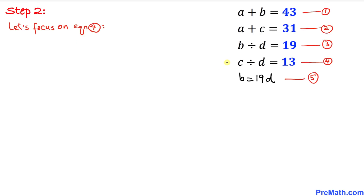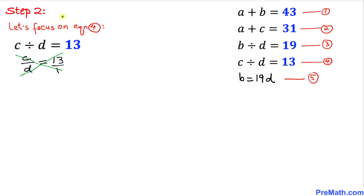Now let's focus on equation number four: C divided by D equals 13. Writing it as a fraction and cross multiplying, we get 1 times C equals 13 times D, so C equals 13D. I'll call this equation number six.